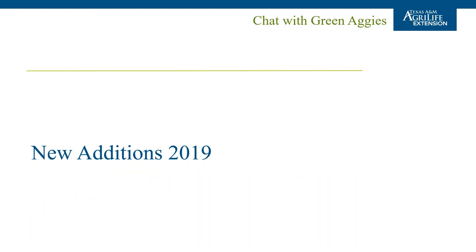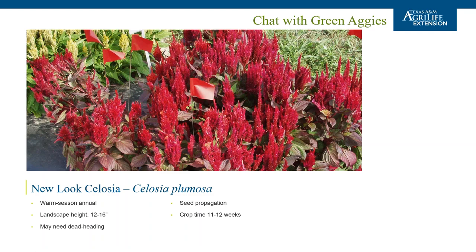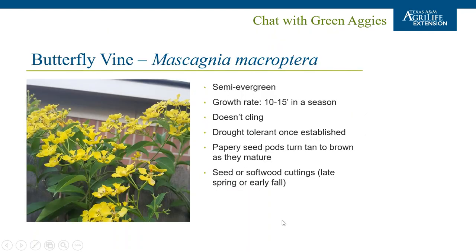Touching on the 2019 additions: New Look Celosia is a warm season annual with a landscape height of about 12–16 inches. It may need some deadheading, but even before it blooms it has attractive burgundy foliage. When it does bloom, you get a nice contrast between the plume-type flower and the dark foliage. It is a seed item with a total crop time of about 11–12 weeks. It works in the midsection of a bed or up front depending on what's planted behind it.